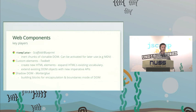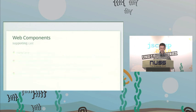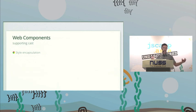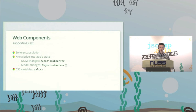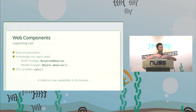Shadow DOM gives us encapsulation and boundaries on the web for the first time. The supporting cast includes styles that are encapsulated and scoped — if you're embedding a widget on your page, you don't want your styles to leak out, and you don't want outside styles to affect how your widget looks. There are also mutation observers, object.observe — which is just landing — and supporting things like CSS variables and the calc function. Web components is now an umbrella term for all these different things coming together.